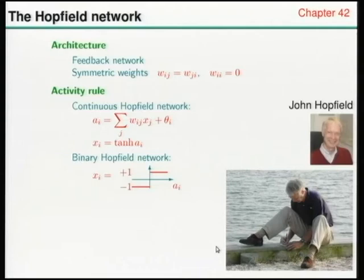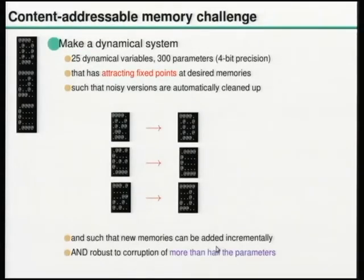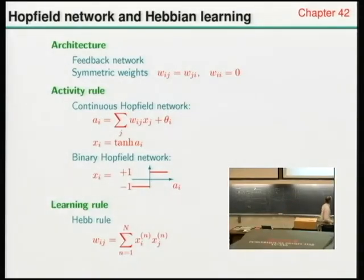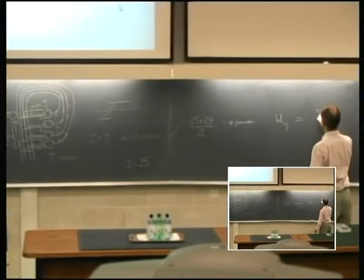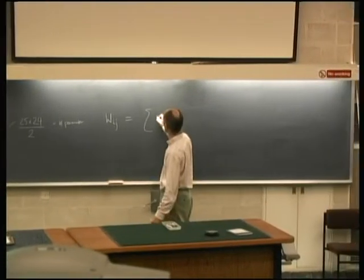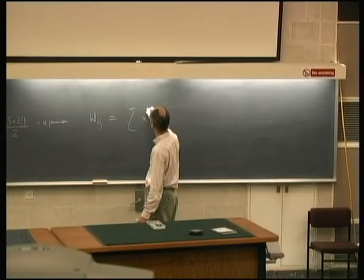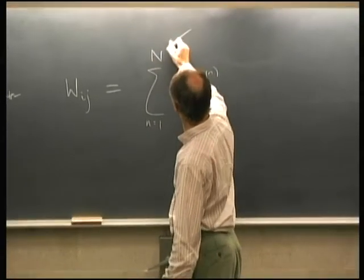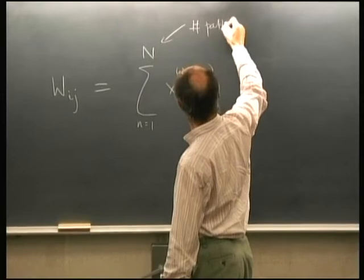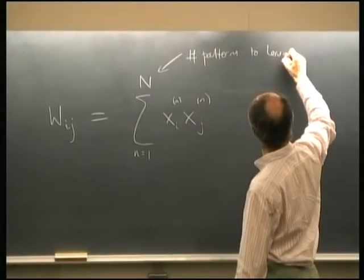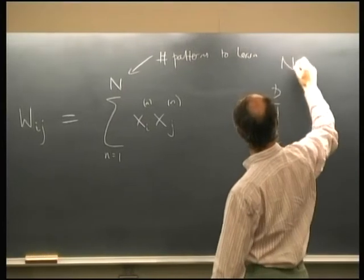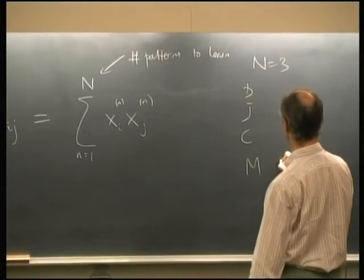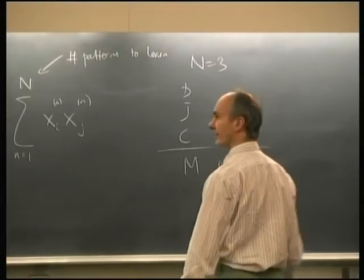We need a rule for setting these roughly 300 parameters w_ij. The simplest rule for solving the content addressable memory challenge is the Hebb rule: set the weight between neurons i and j by measuring how correlated x_i and x_j are across all patterns you want to learn, where n is the number of patterns. In our D, J, C example n is three, and becomes four once you add M.